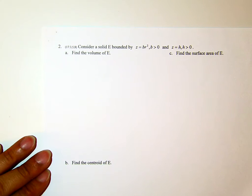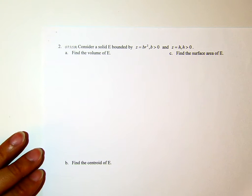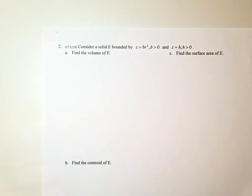Consider a solid E bounded by z equals Br squared, where B is a positive number, and z equals H, where H is a positive number. The first equation, I hope you can see right away, is a paraboloid.